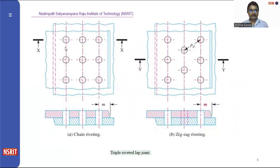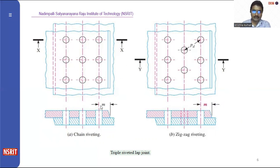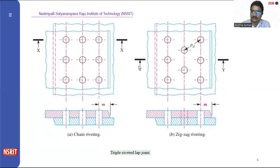Looking at chain riveting, this is the cross section and the thickness of the plate is indicated here. In chain riveting, multiple series of rivets are aligned one after another. The distance between the two rivets and also the distance from the center neutral axis to the plate is represented and appears slightly smaller.